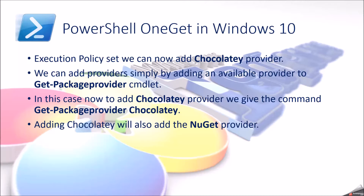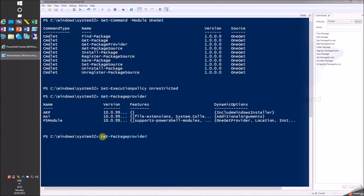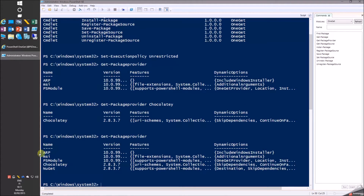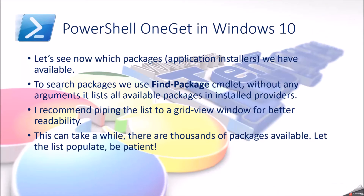Adding Chocolatey will also add the NuGet provider. Now let's see which packages we have available. To search packages, we use the Find-Package commandlet. Without any arguments, it lists all available packages in installed providers. I recommend piping the list to a grid view for better readability.